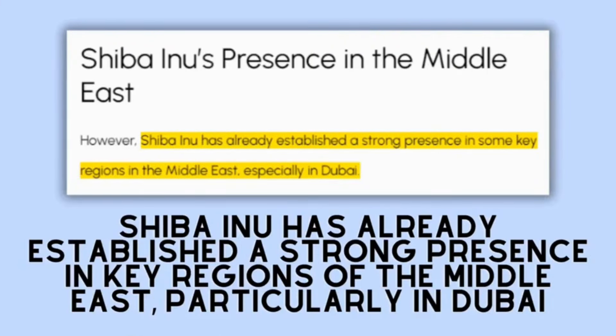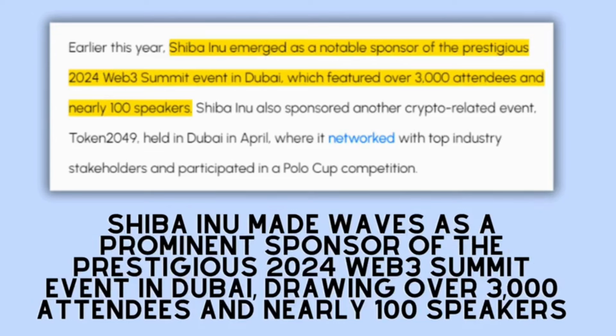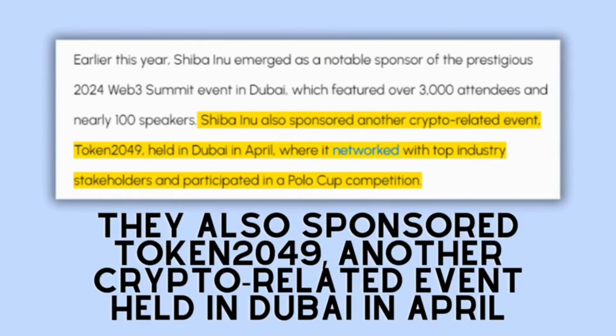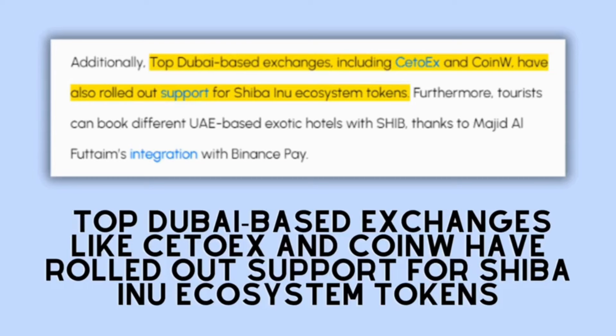However, it's a known fact that Shiba Inu has already established a strong presence in key regions of the Middle East, particularly in Dubai. Earlier this year, Shiba Inu made waves as a prominent sponsor of the prestigious 2024 Web3 Summit event in Dubai, drawing over 3,000 attendees and nearly 100 speakers. They also sponsored Token 2049, another crypto-related event held in Dubai in April, where they engaged with industry leaders and even participated in a Polo Cup competition. Moreover, top Dubai-based exchanges like CETO-X and CoinYu have rolled out support for Shiba Inu ecosystem tokens.